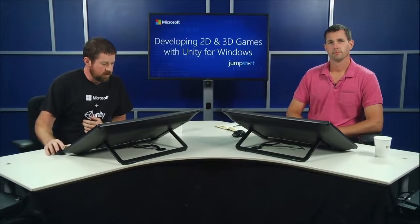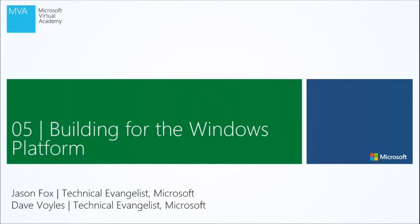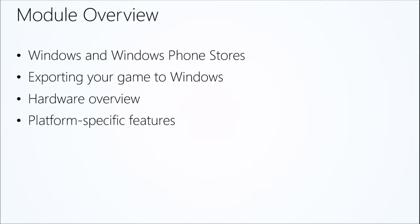We are in Module 5, building for the Windows platform, using Unity to target Windows Store and Windows Phone. We're going to cover the stores — there are two separate stores right now, Windows and Windows Phone — and we're going to talk about exporting your game to each one of these platforms. Then we'll talk about the hardware, what's involved, what kind of hardware you can target, and then platform-specific features and how to make use of those.